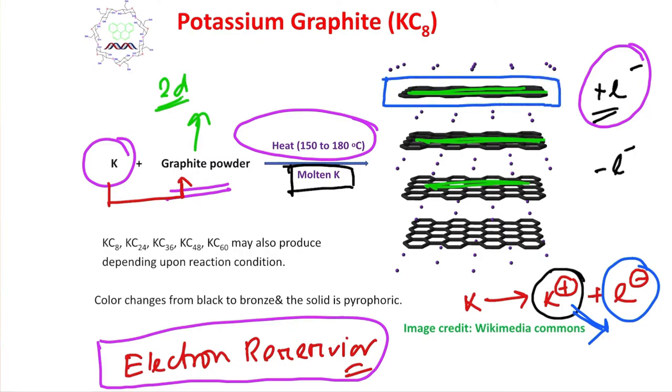This potassium goes into the interlayer. These dots you are observing are nothing but potassium plus ions. Consequently, the interlayer spacing increases and potassium gets intercalated within the system.